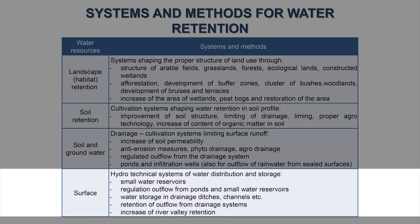Surface water retention — the most popular methods — can be achieved with small reservoirs, ponds, water storage in drainage ditches and channels, retention of outflow from drainage systems, and increase of river valley retention.